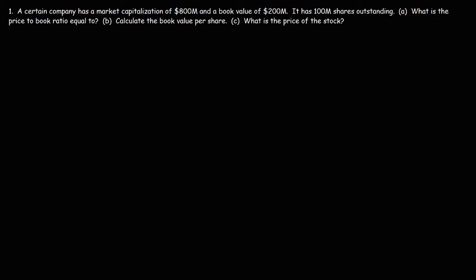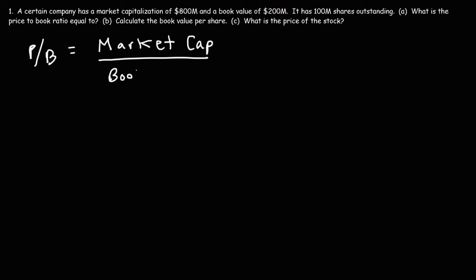So let's start with problem number one. A certain company has a market capitalization of $800 million and a book value of $200 million. It has 100 million shares outstanding. Part A: what is the price-to-book ratio? The formula we use to calculate the PB ratio is: it's equal to the market cap divided by the book value of the company.